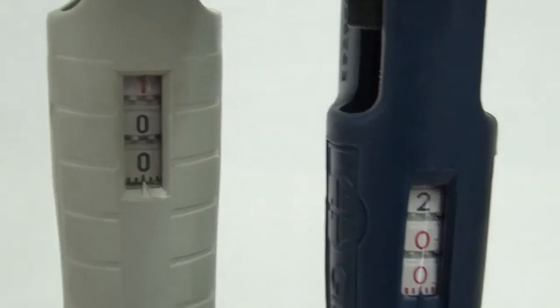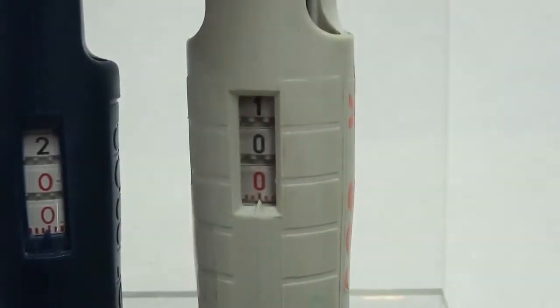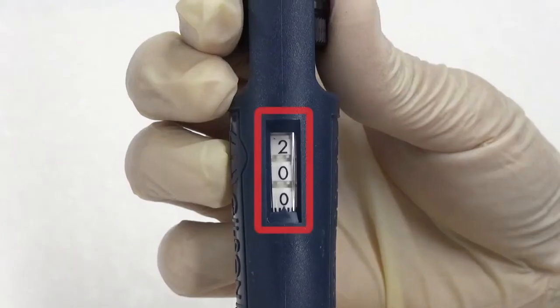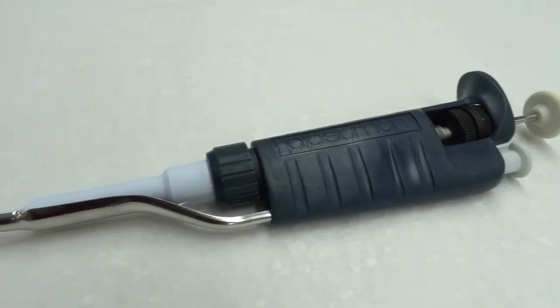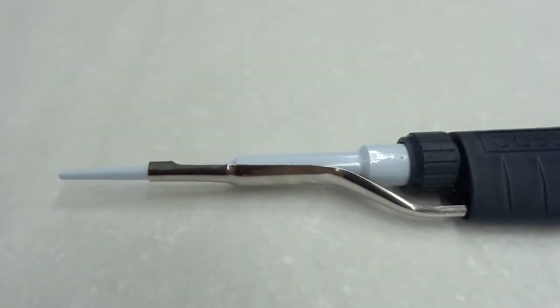There is a digital volume indicator at the middle to display the current aspiration volume. Note the scale of displayed digits. The tip cone at the lower end of the shaft can fit various types of disposable tips.